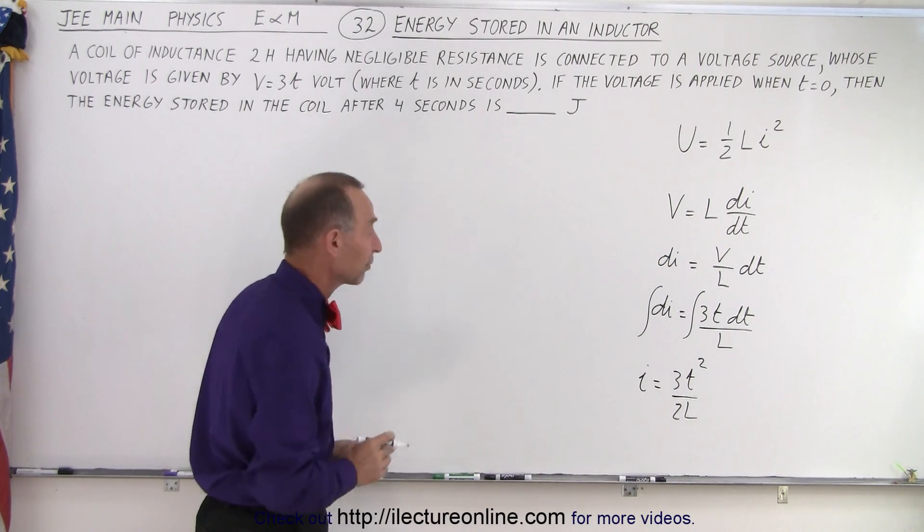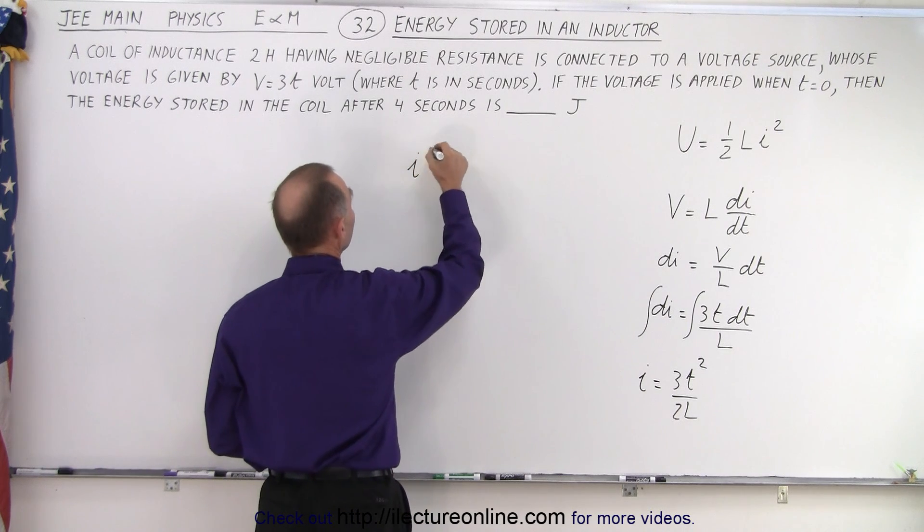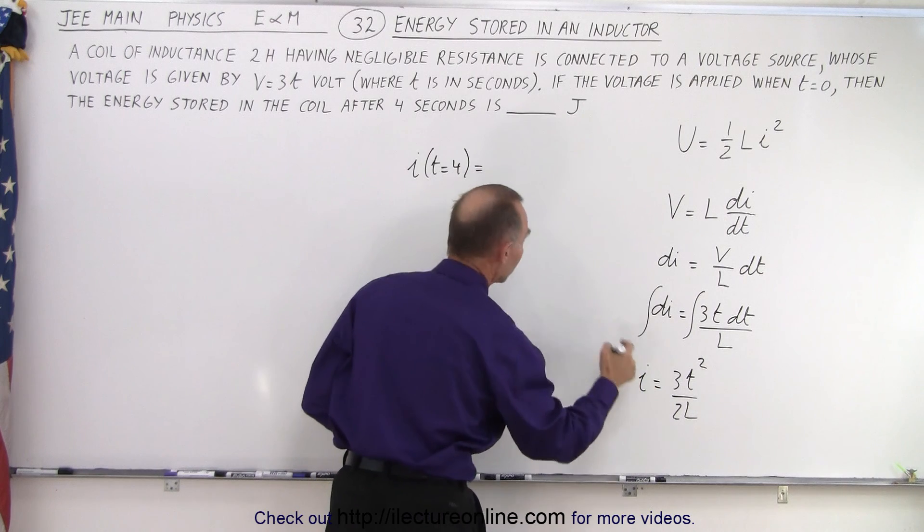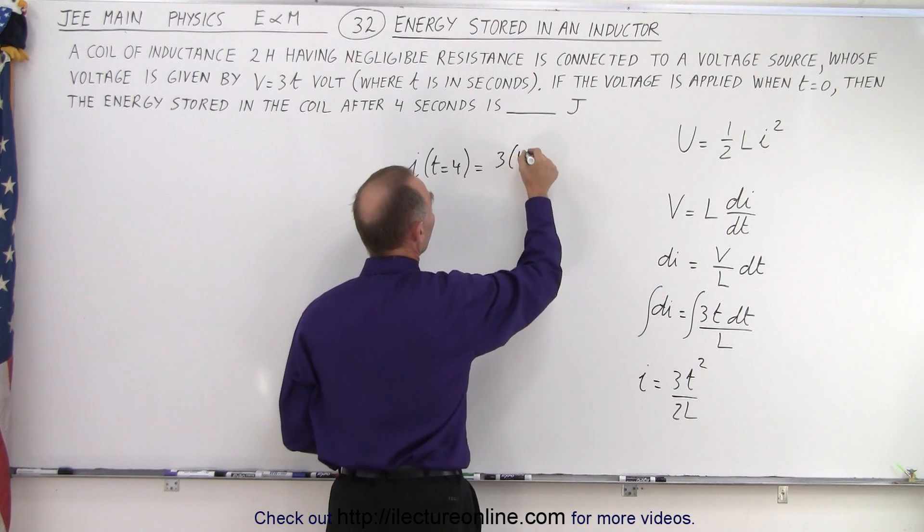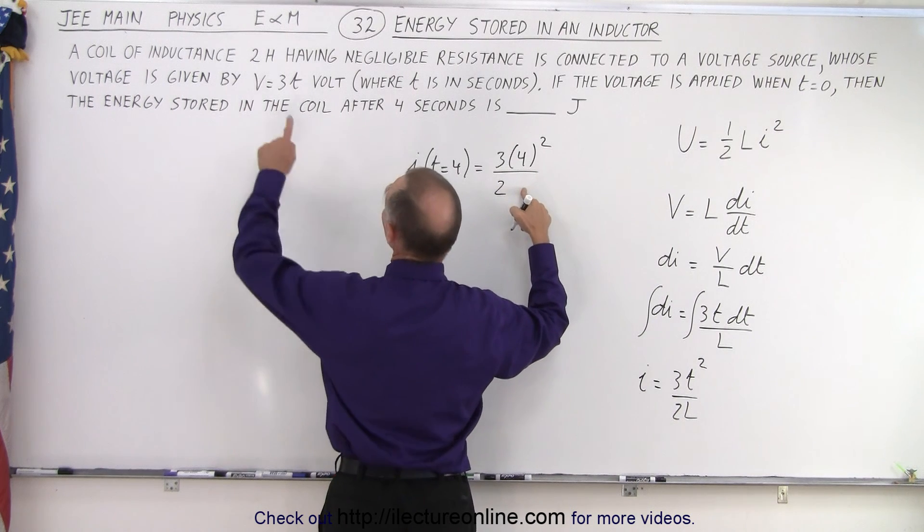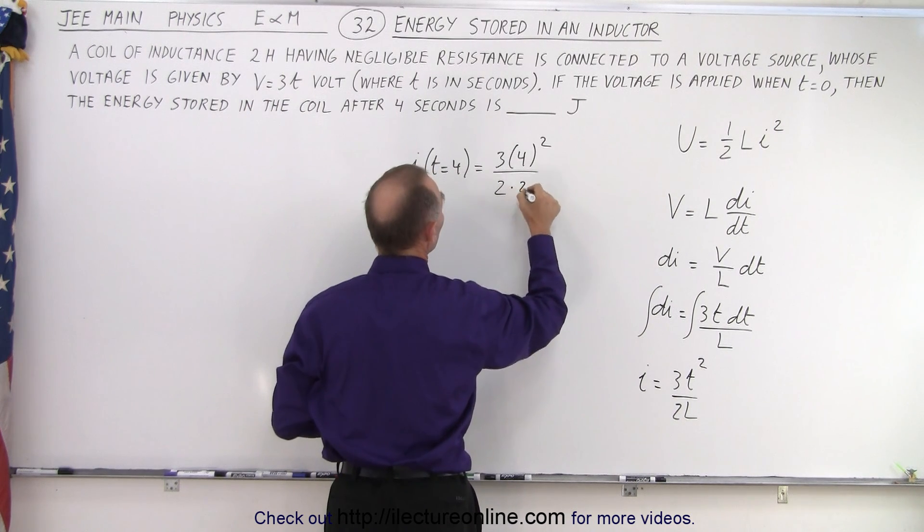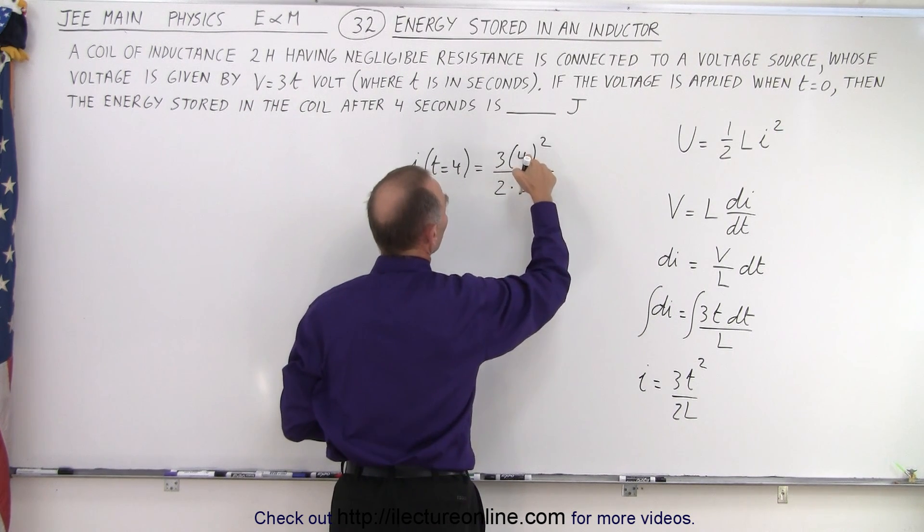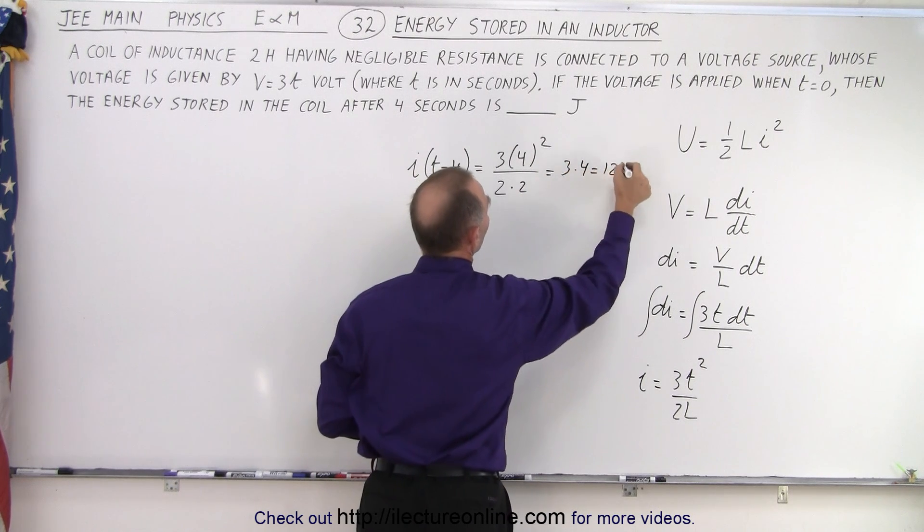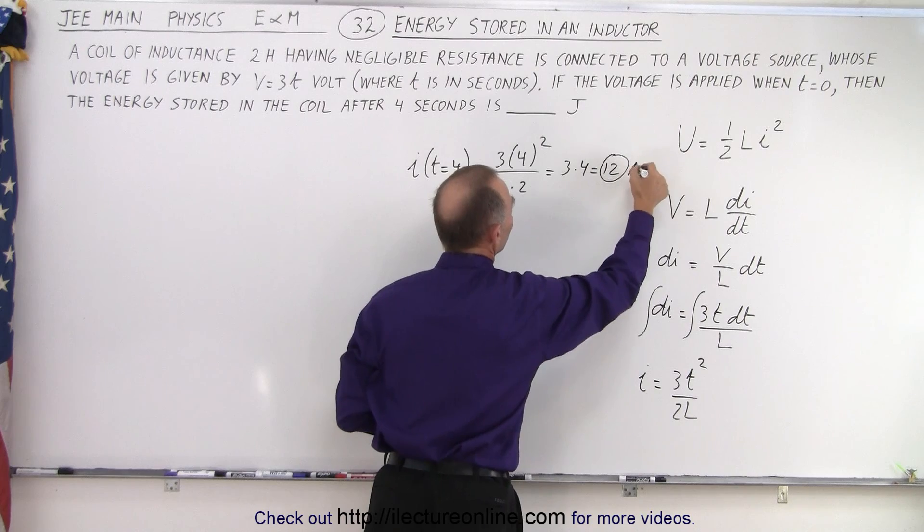So now what we can do is we can find the current after four seconds. So I when T is equal to 4 is equal to 3 times 4 squared divided by 2 times the inductance which is 2. So this would be 4 squared divided by 4, so that would be 3 times 4, which is 12.